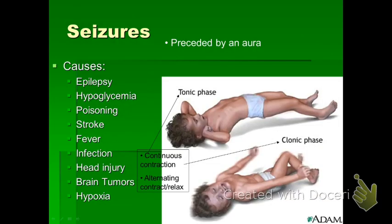There are many causes of seizures, and sometimes the cause is unknown. Common causes include chronic medical conditions, epilepsy, hypoglycemia, poisoning, stroke, fever, infection, head injury, brain tumors, hypoxia, and complications with pregnancy. A seizure is the result of a nervous system malfunction — one of the most delicate body systems. Seizures can last anywhere from five minutes or longer, depending on the type.